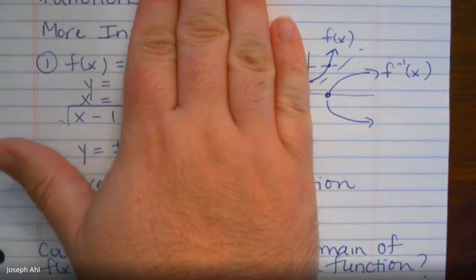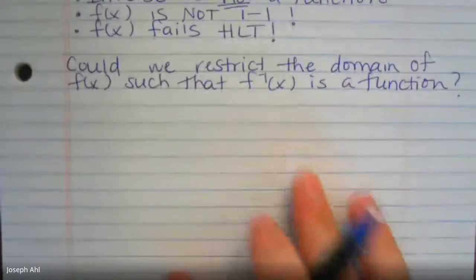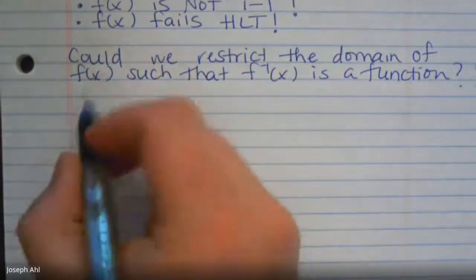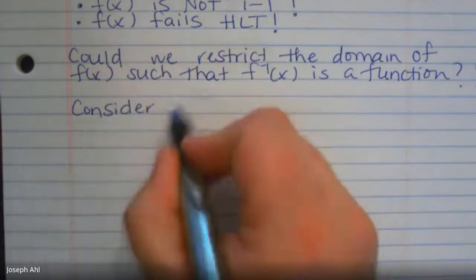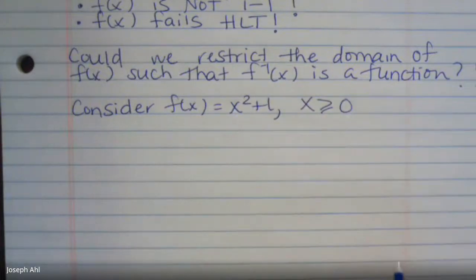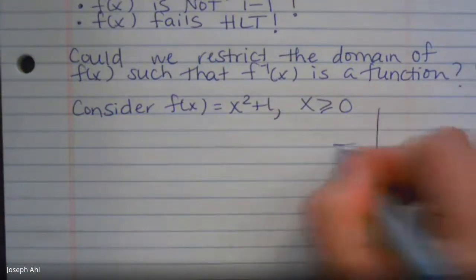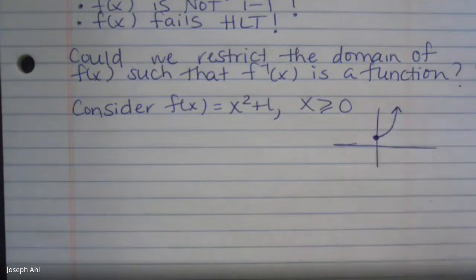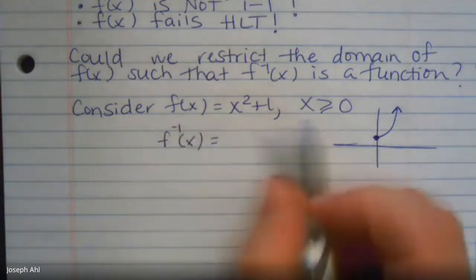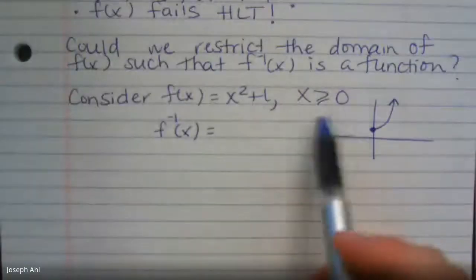Let's choose the easier side — where x is greater than or equal to zero. If we consider f(x) = x² + 1 but only on the interval x ≥ 0, we get just that half of the parabola. Sketching this, it's shifted up one unit, and you only get that right side when x ≥ 0.